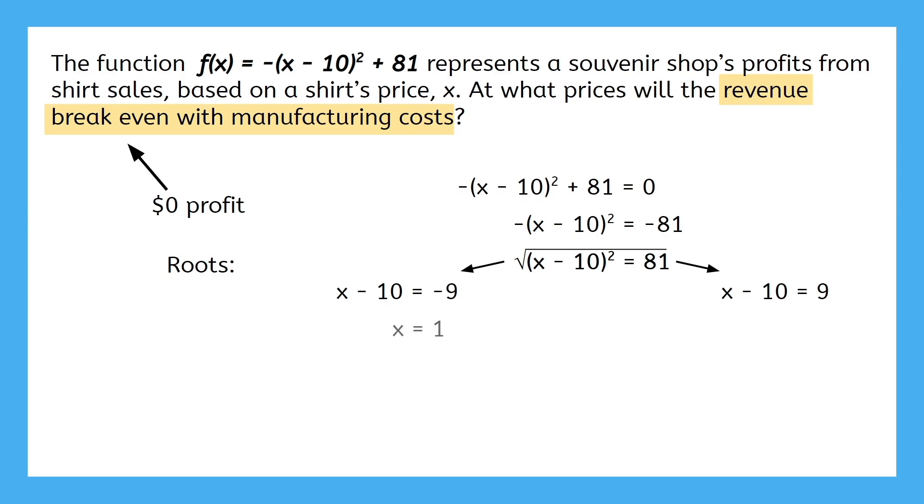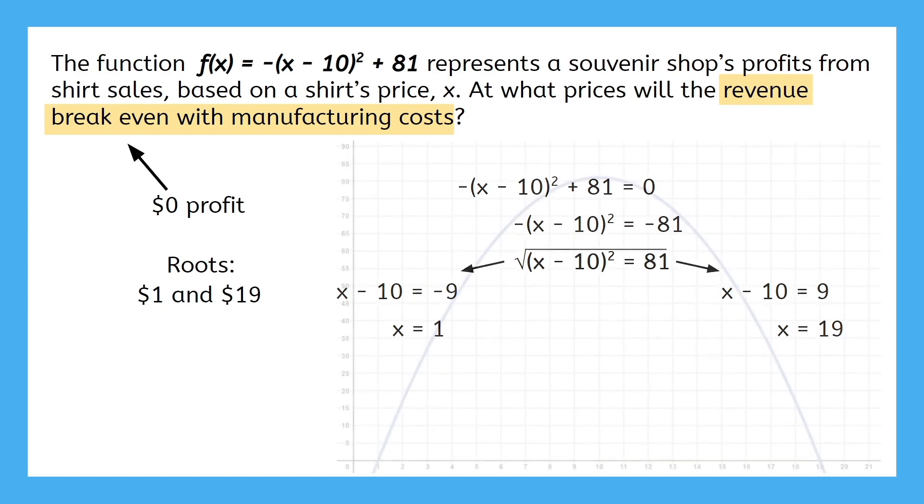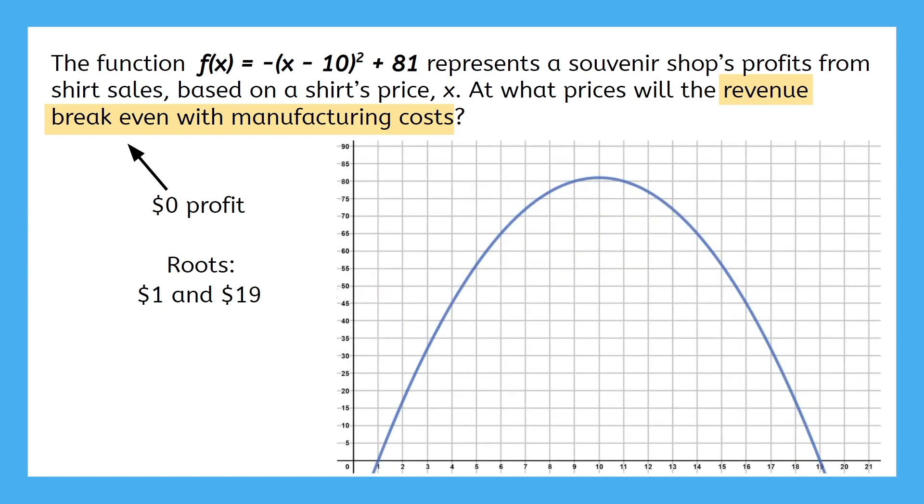If we get negative 9, then when we add 10, we get 1. And if it's positive 9, then we add 10 and get 19. Now we know that there are two roots, 1 and 19. And remember, these are prices for the shirts. At $1, the shop will probably sell lots of shirts, but for way too cheap. And at $19, they probably won't sell enough. Again, we can also see these same results on a graph.